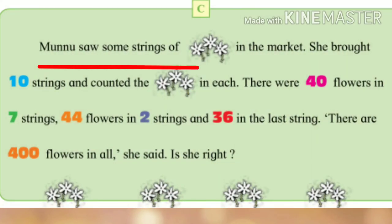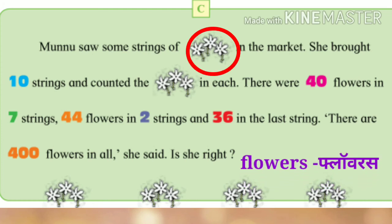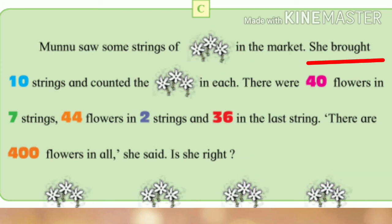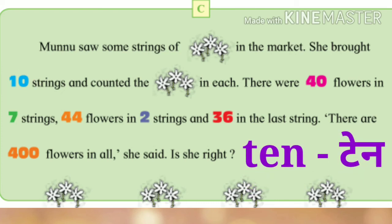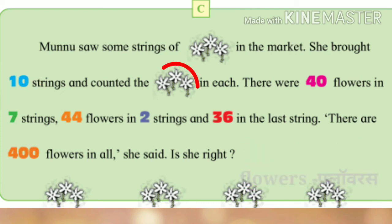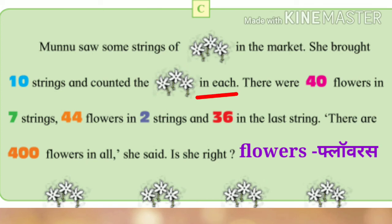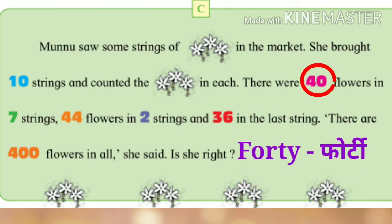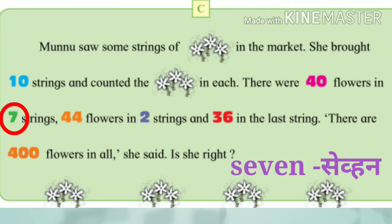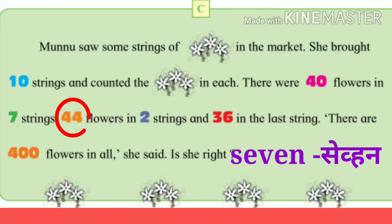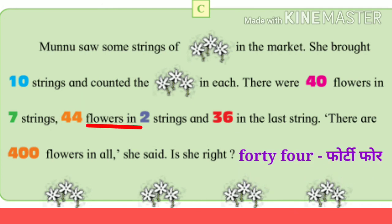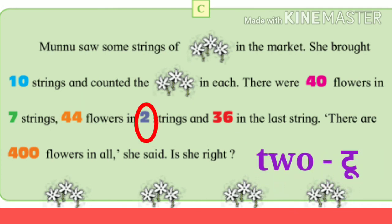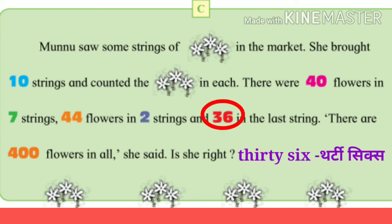Munnu saw some strings of flowers in the market. She bought ten strings and counted the flowers in each. There were forty flowers in seven strings, forty-four flowers in two strings, and thirty-six in the last string.